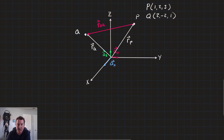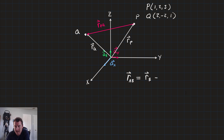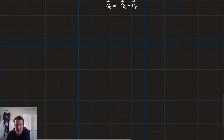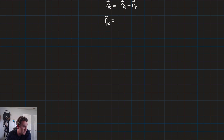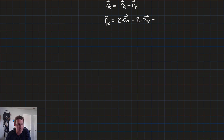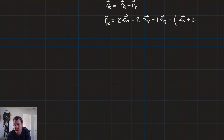The formula for a vector connecting two points A and B is equal to the vector at B minus the vector for A. So in practice, r of PQ is equal to r_Q minus r_P. Working it out: vector r_PQ equals r_Q, which is 2 times a_x minus 2 times a_y plus 1 times a_z, minus the whole vector r_P, which is 1 times a_x plus 2 times a_y plus 3 times a_z.